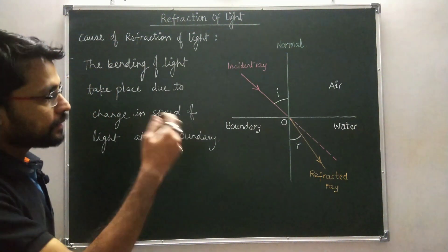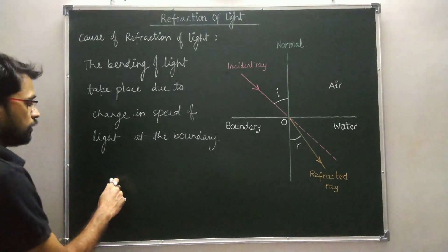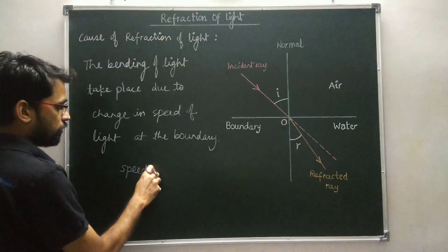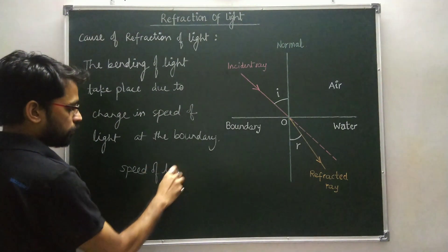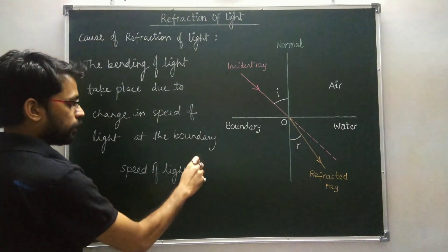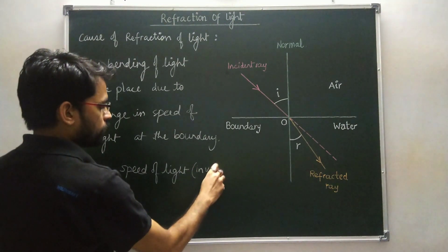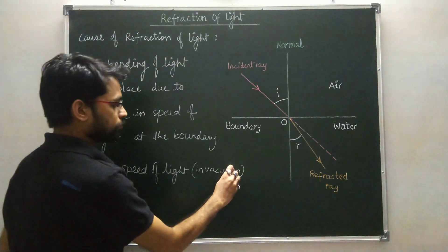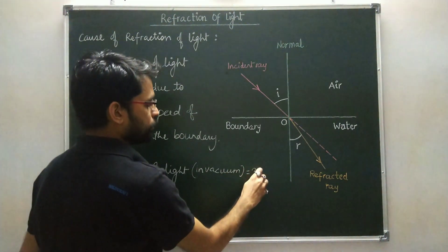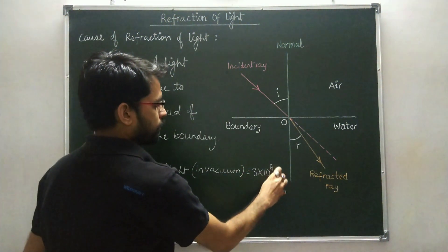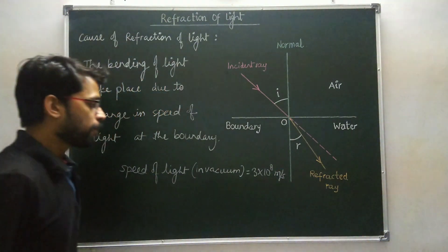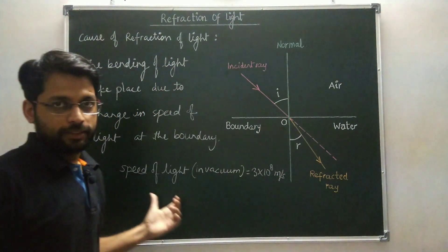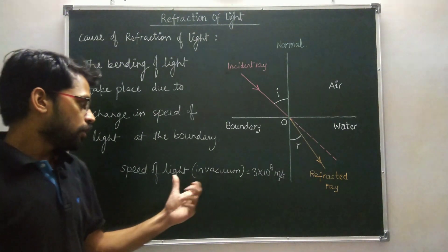Since we know that the speed of light in vacuum is 3 × 10^8 meters per second, and this is the ultimate speed of light.